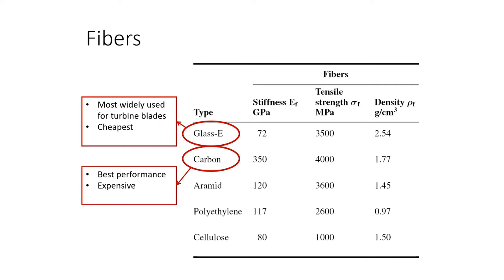Here is the comparison of material properties of different kinds of fibers. Glass fibers are most widely used for turbine blades and are the cheapest, whereas carbon fibers offer the best performance but are more expensive.